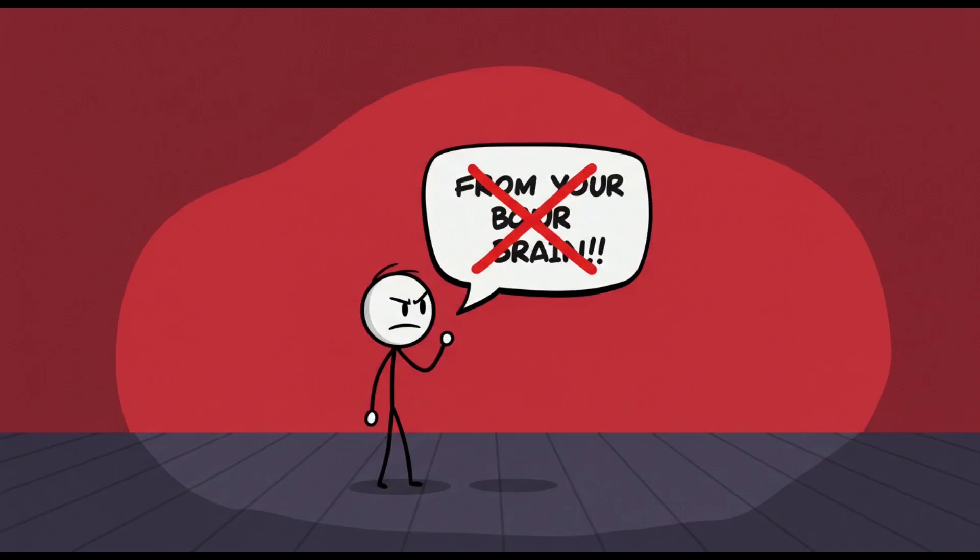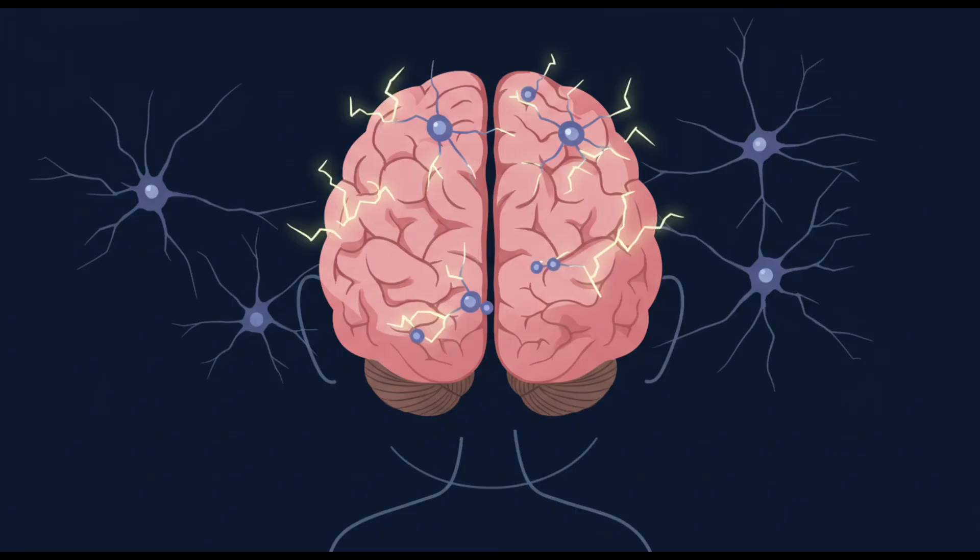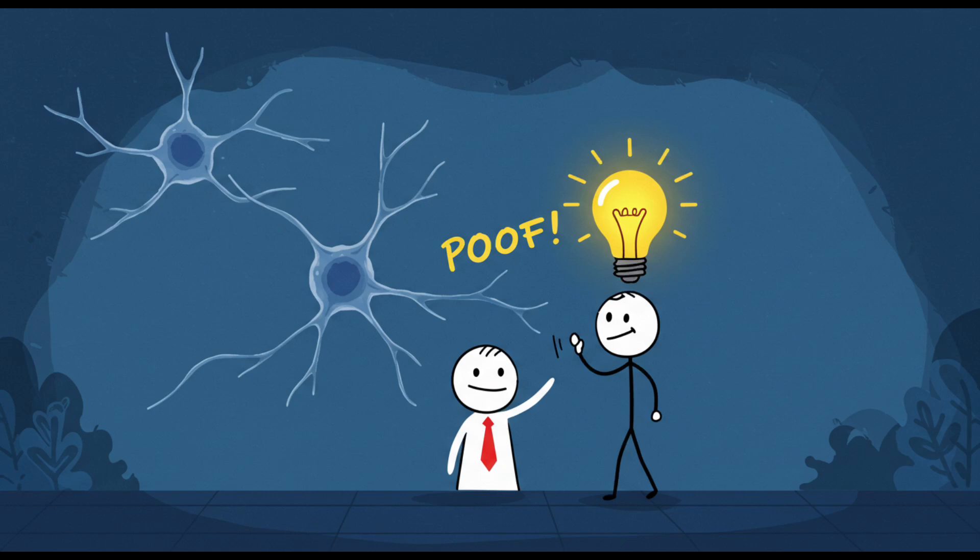The default adult answer is, 'From your brain,' which is technically true, but also useless. That's like saying a cake comes from the oven. Okay, but how? What scientists know is that thoughts are the result of electrical signals and chemical reactions bouncing between about 86 billion neurons in your head. Those neurons form connections, pass messages, and poof, you have an idea.